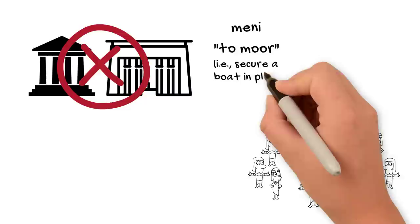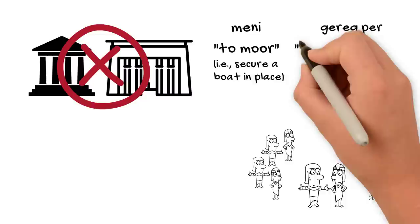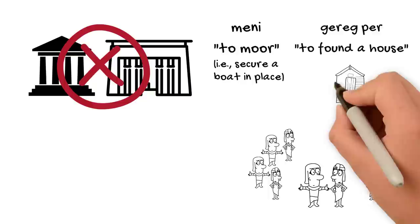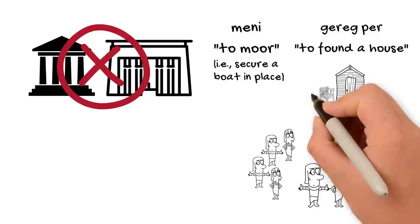Getting married is referred to in ancient Egyptian by the euphemisms mehi to moor and gerig per to found a house, supporting the idea that marriage was largely about having a shared dwelling, a shared place to live, and shared marital property.